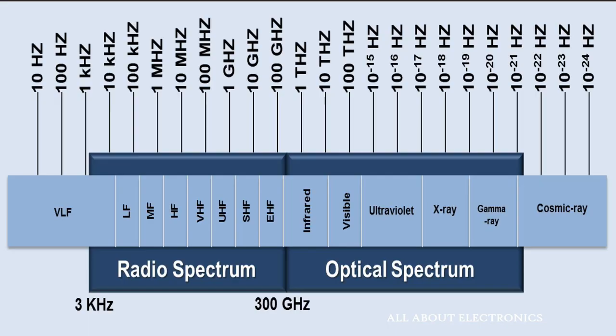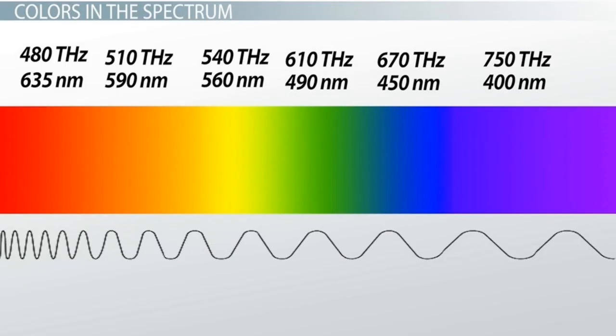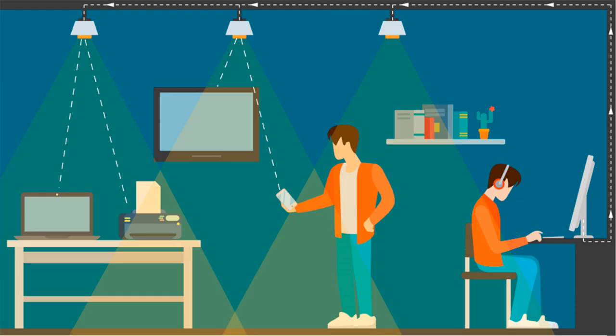Looking at the electromagnetic spectrum, the bandwidth of radio waves is up to 300 GHz. The bandwidth of the visible spectrum alone is around 300 THz, which is almost 1000 times more than radio waves. So not only can you achieve higher speed, but you will also not encounter any electromagnetic radio interference. In Li-Fi, since we are using visible light, it cannot cross walls — unlike Wi-Fi where radio waves can transmit through walls. In this way, Li-Fi technology provides one more layer of security.